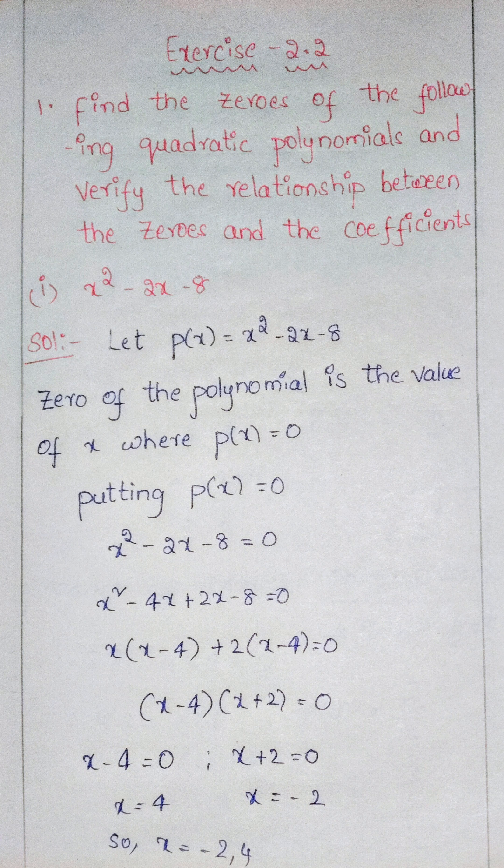In this first question, we are given x squared minus 2x minus 8. Let us denote this equation as P of x. The zeros of the polynomial are the values of x where P of x is equal to 0. So let us equate P of x to 0.